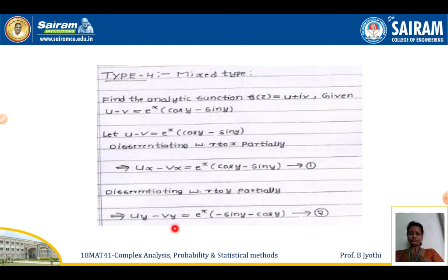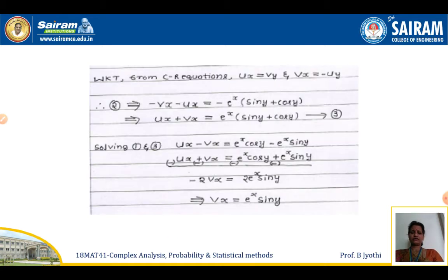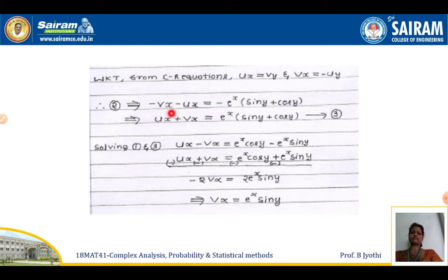Here, we need to eliminate either v or u so that we get one variable. From the Cauchy-Riemann equations, u_x = v_y and v_x = minus u_y. So in the second equation, replacing using CR equations gives minus v_x minus u_x equals e^x(minus sin y minus cos y), which implies, cancelling the minus on both sides, u_x plus v_x equals e^x into (sin y plus cos y). Call this equation 3.